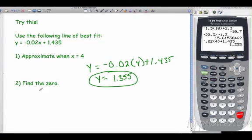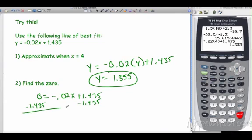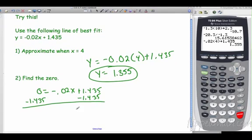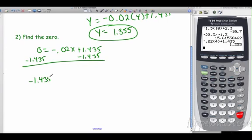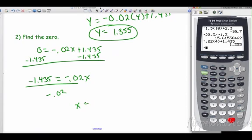Now it says find the zeros. So I plug in the 0 for a y, negative 0.02x plus 1.435. Subtract 1.435 from both sides. And then I have negative 1.435 equals negative 0.02x. Divide both sides by negative 0.02. And let's see what we get. That one I don't know off the top of my head. Negative 1.435 divided by negative 0.02 gives me 71.75.